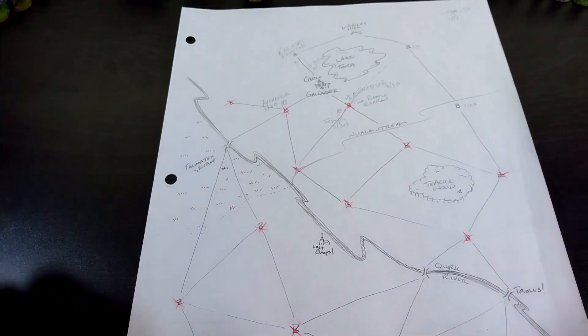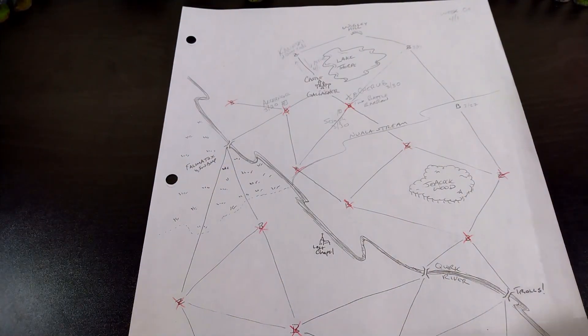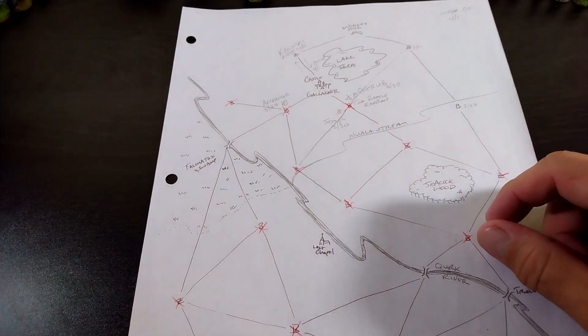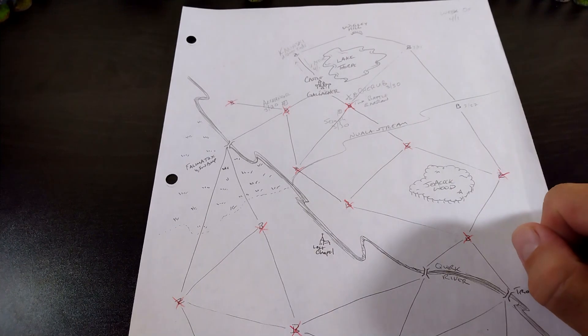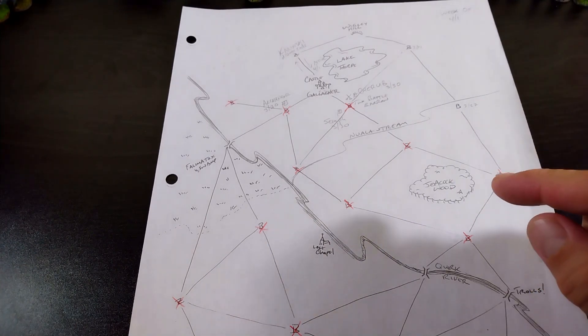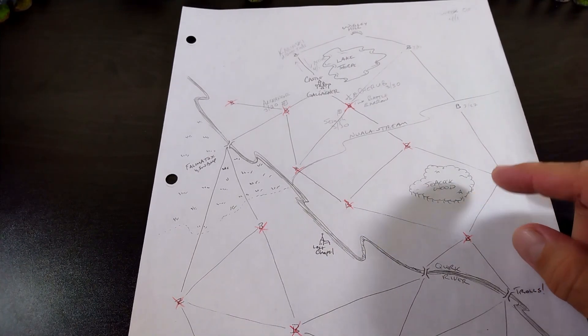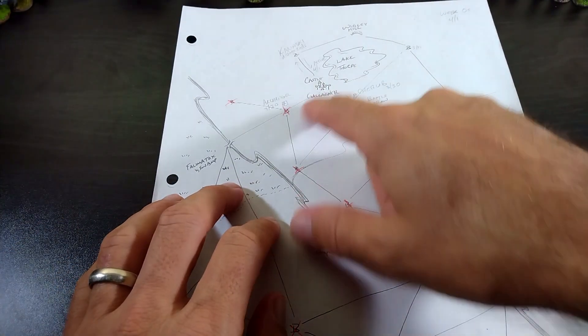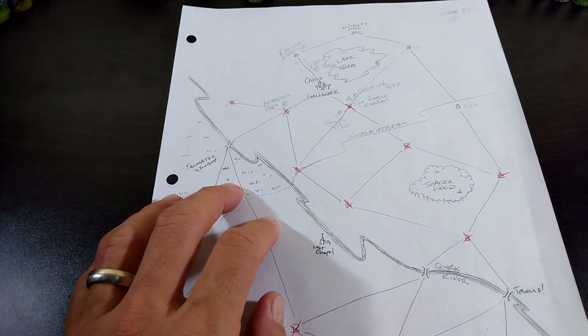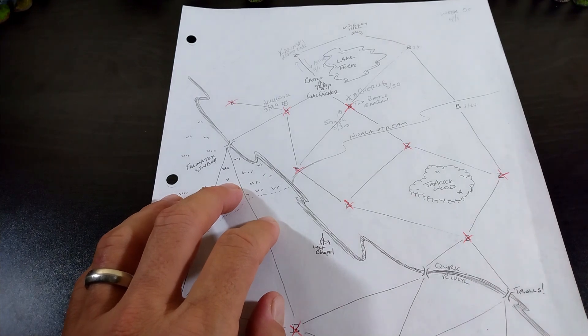When we started this Broman Crusade, we hypothesized that it would either be a long, slow, grinding defeat for the forces of the Bromans, or a lightning victory, and it looks like we're shaping up to have the latter. But it's not over yet. Before we get into the map situation, let's take a look at the results of our last battle.